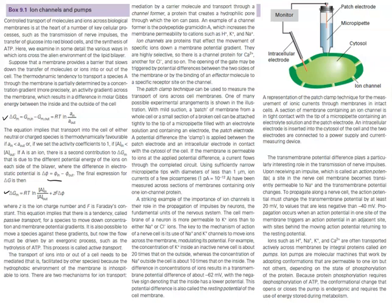Ion transport across membranes must be mediated because the hydrophobic lipid bilayer environment is inhospitable to ions. There are two mechanisms: carrier molecules, and channel formers — proteins that create hydrophilic pores. An example is the polypeptide gramicidin A, which increases membrane permeability to cations such as protons, potassium, and sodium. Ion channels are highly selective proteins that facilitate movement of specific ions down a membrane potential gradient; the gate opening may be triggered by potential differences or effector molecule binding. The patch clamp technique measures ion transport across cell membranes, with ion currents of a few picoamperes measured across sections containing only one ion channel protein.